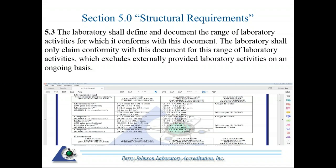This is a requirement: the laboratory shall define and document the range of laboratory activities for which it conforms with this document. The laboratory shall only claim conformity with this document for this range of laboratory activities, which excludes externally provided laboratory activities on an ongoing basis. Those externally provided activities — or subcontracting on a permanent basis — would typically be things that are outside the lab's capabilities anyway.